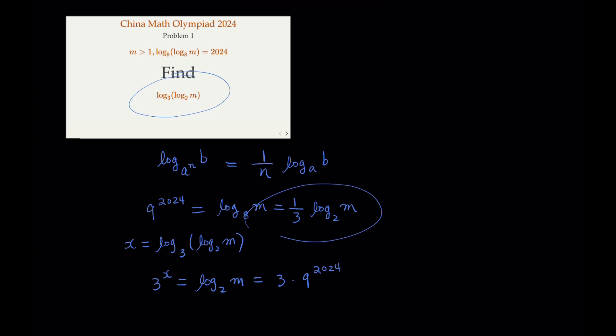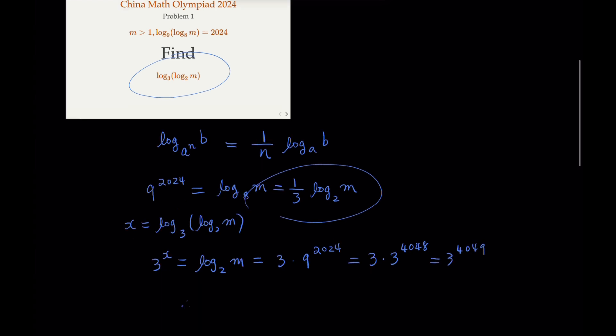Of course, 9 is 3 squared. So 3 times 3 to the 4048, or 3 to the 4049. So the x value is 4049. That's the expression we're looking for. That is log base 3 of log base 2 of m.